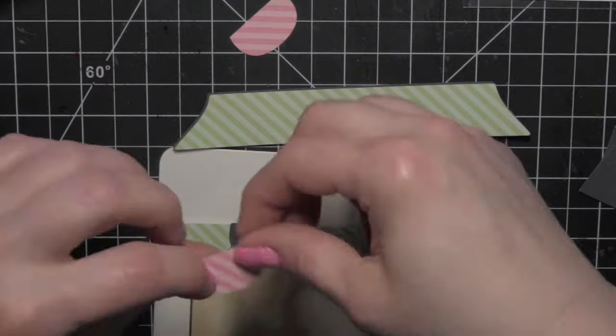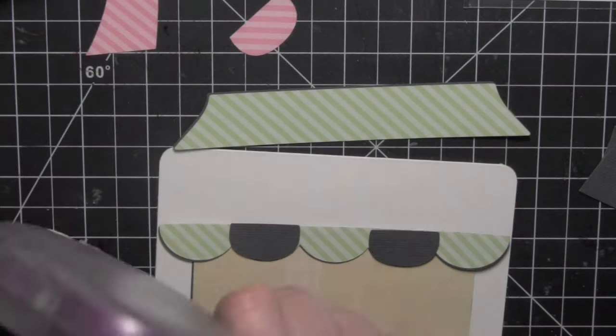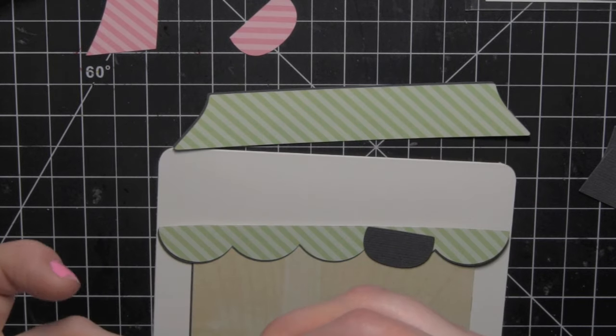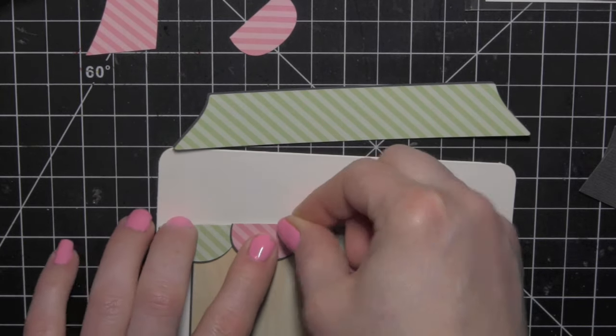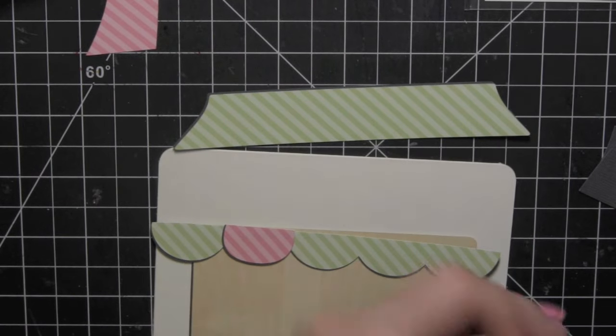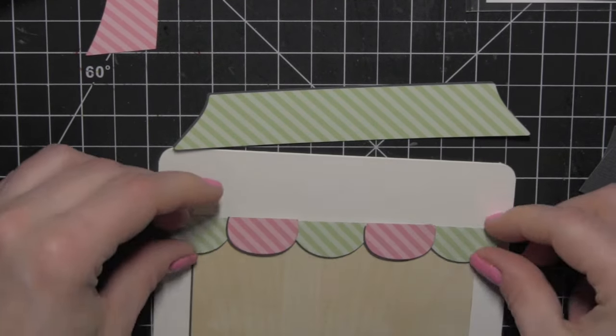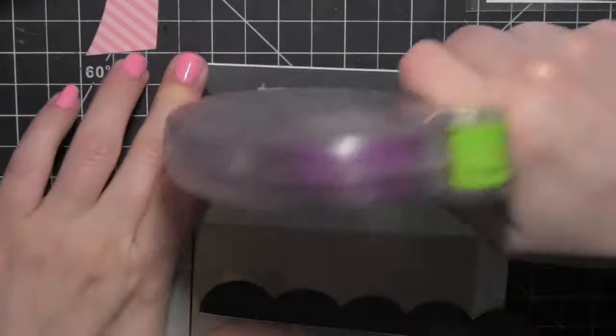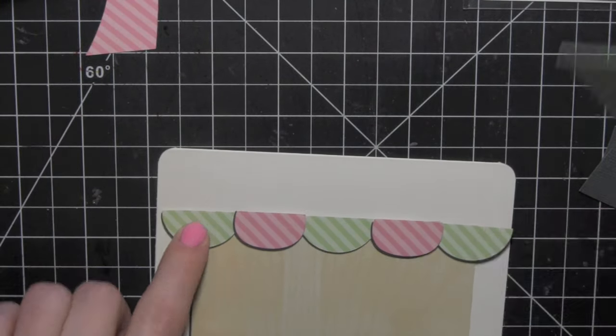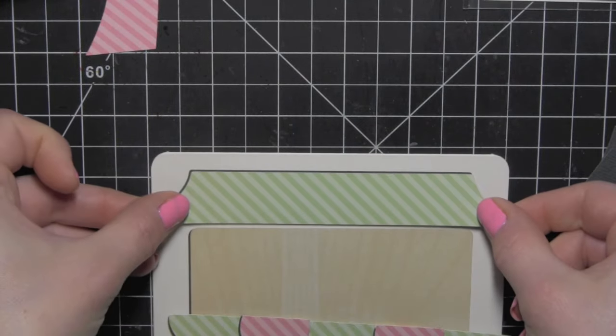I like to layer my die cuts on some solid either black or gray. I used a dark gray in this instance to really give them some dimension, especially with the black outline on the stamped images. I think it gives this maybe a little bit more of a finished look. So everything was die cut twice, once from the patterned paper and then once from the gray cardstock.